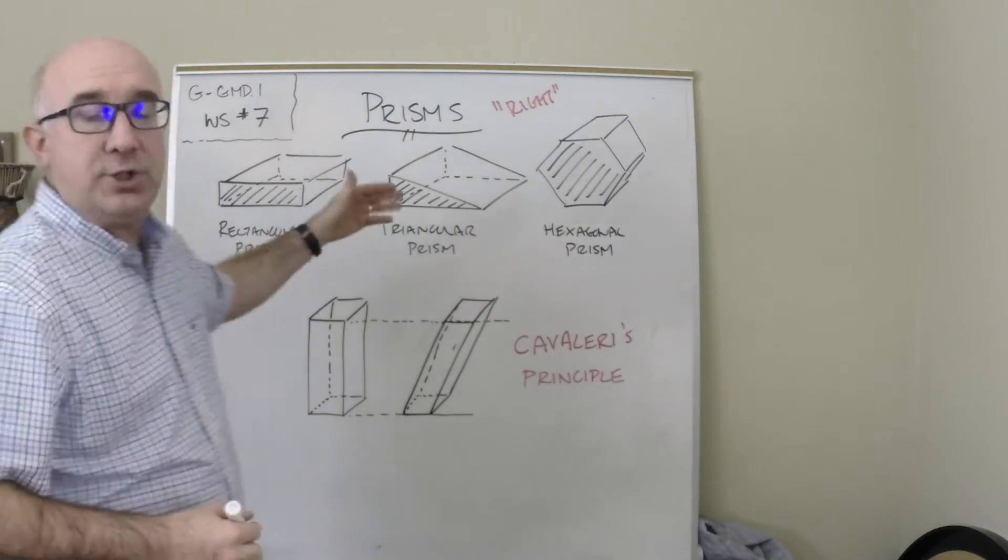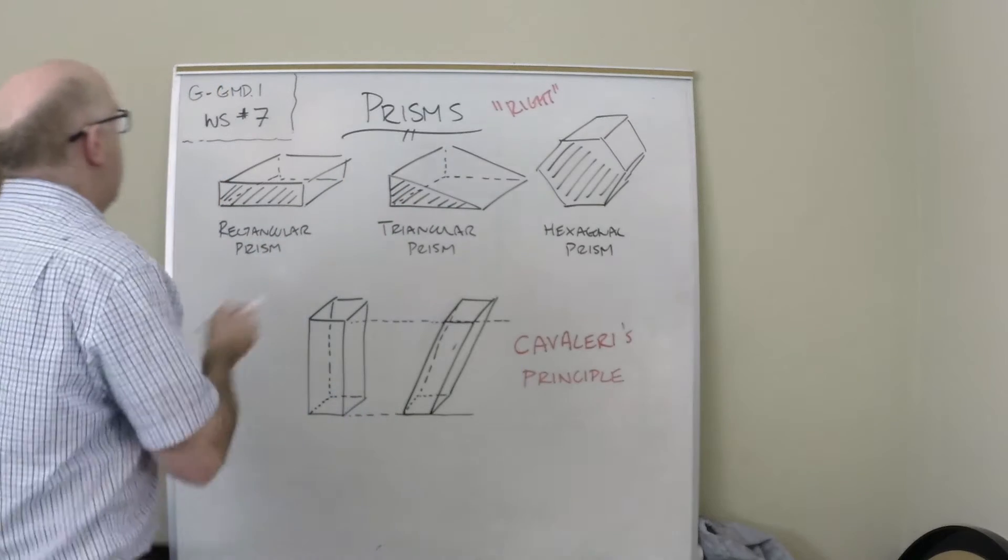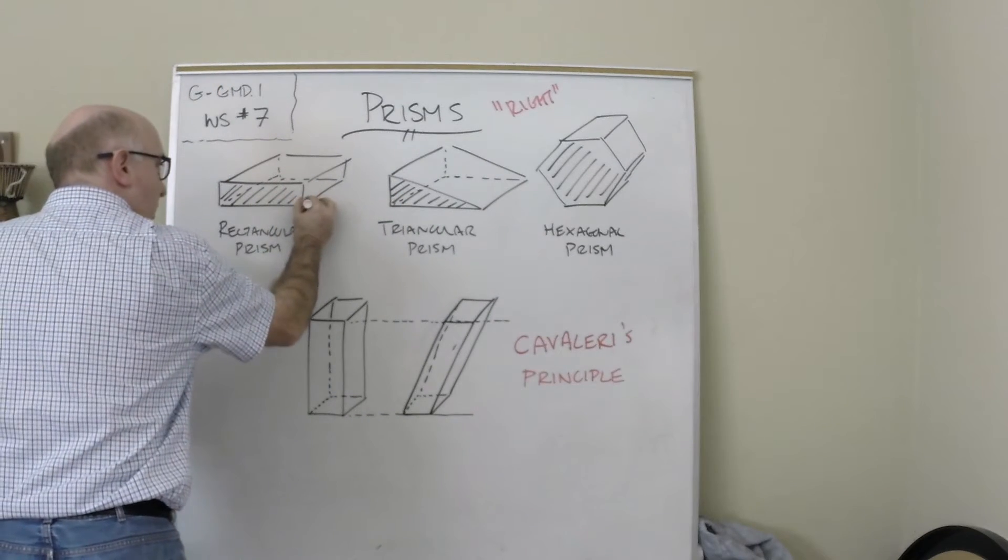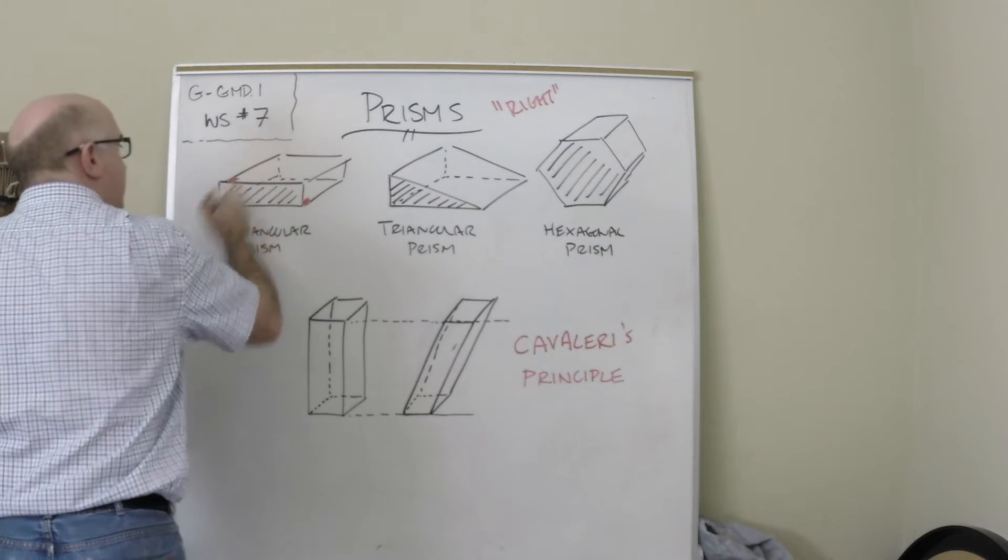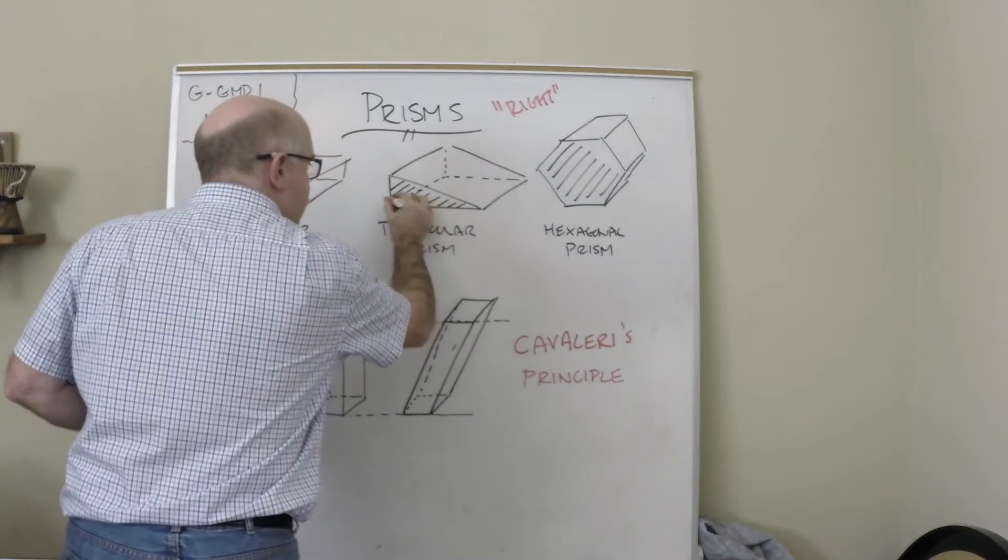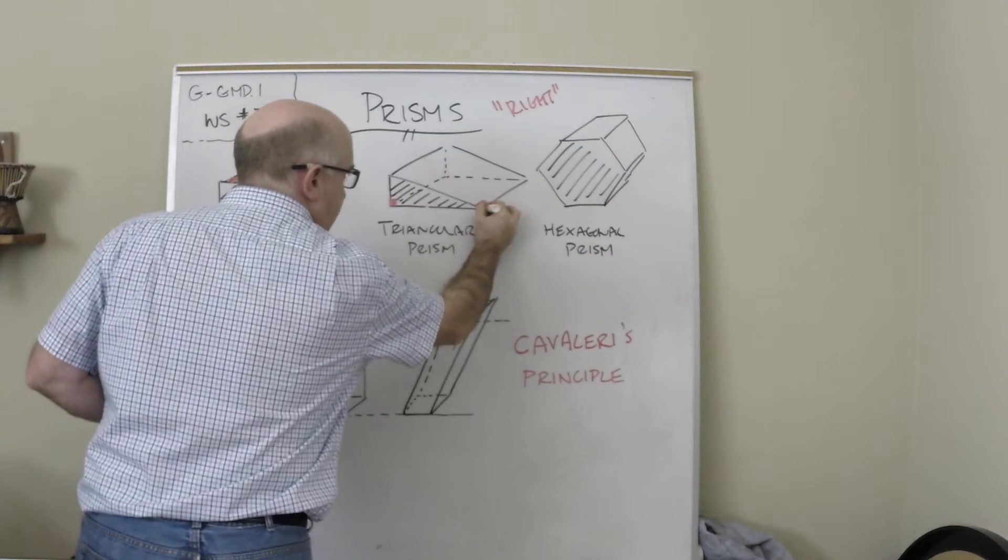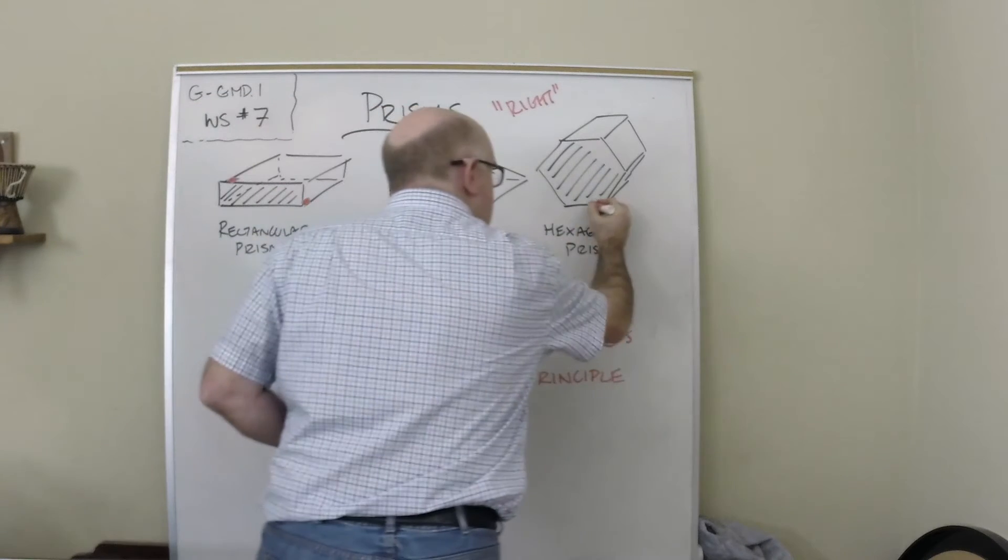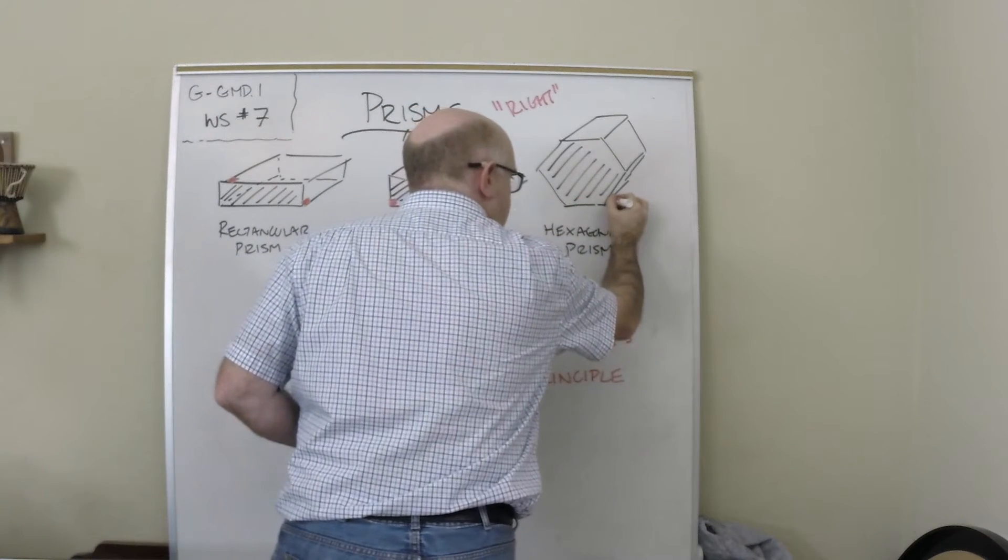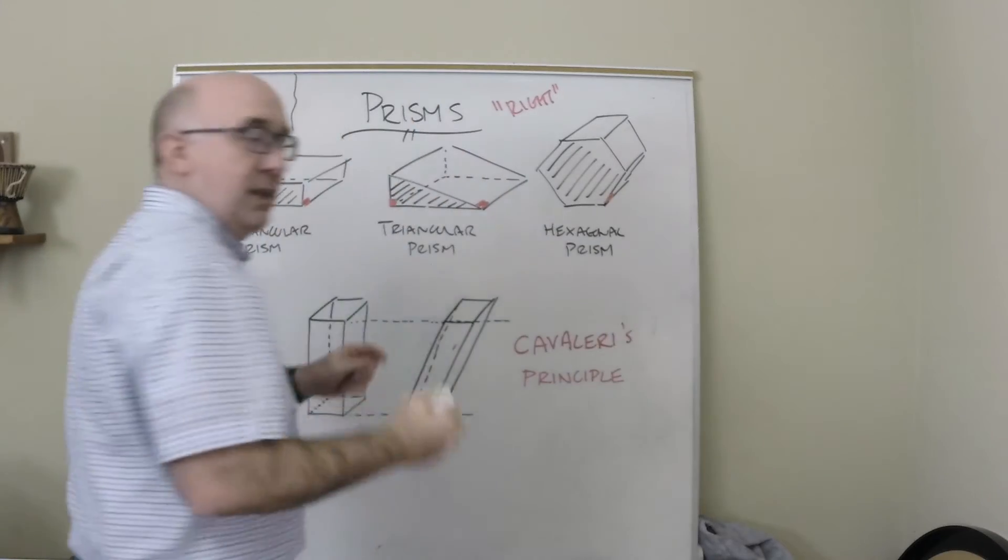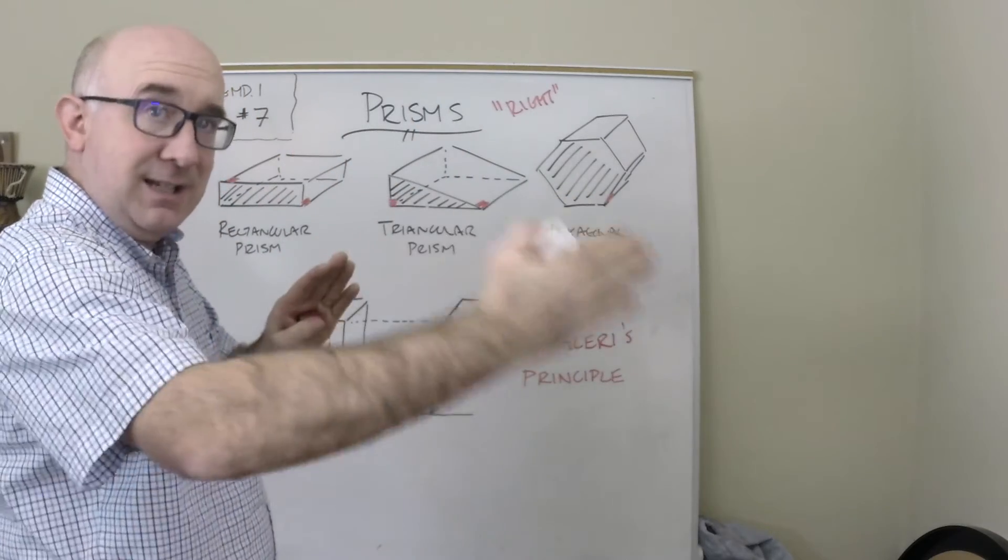When you look at these diagrams, these are right rectangular prisms or right triangular prisms and so on, because the intersections of all of the lines are perpendicular to each other. So we get perpendicular relationships between the base and its lateral side.